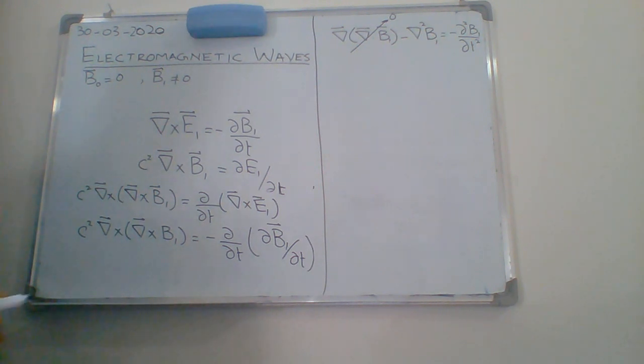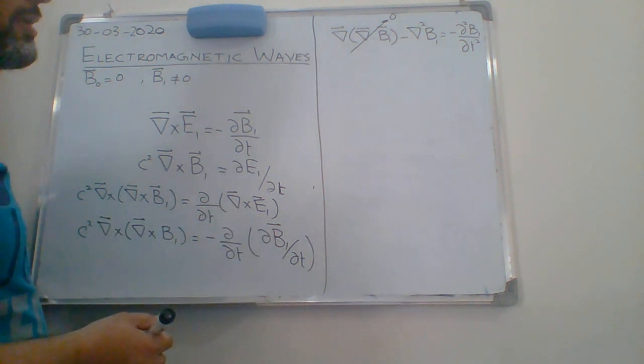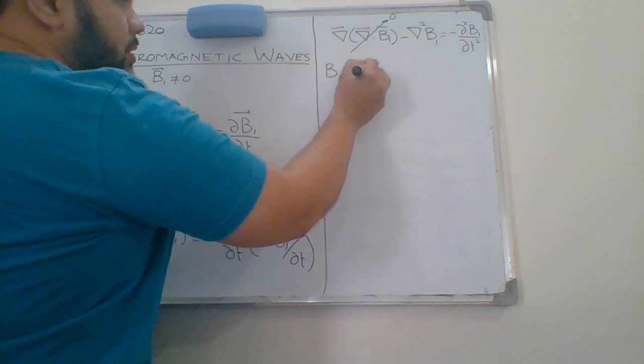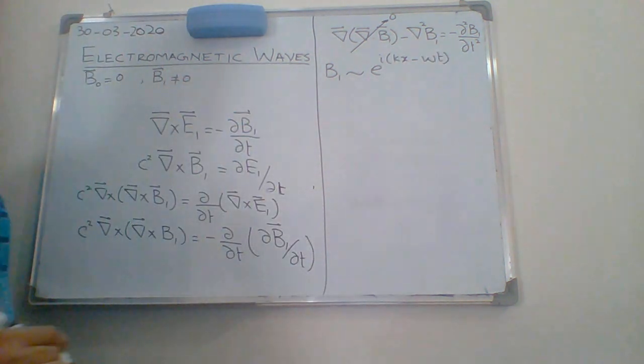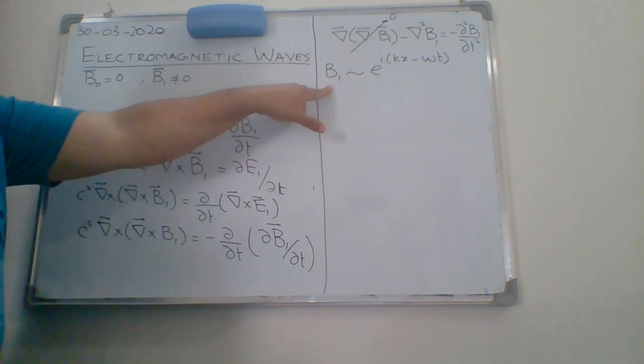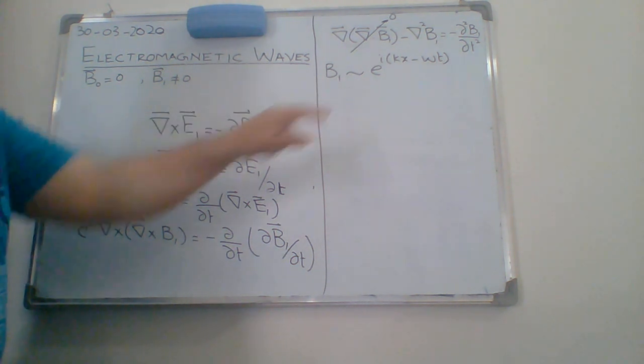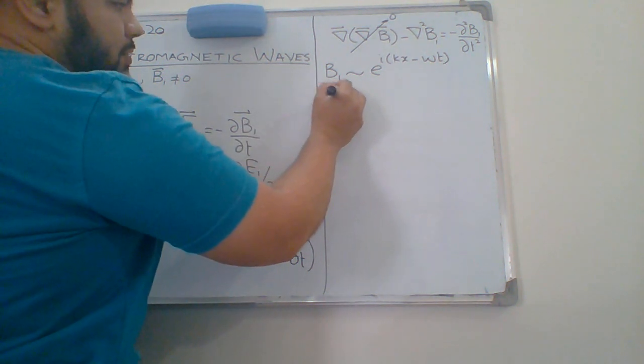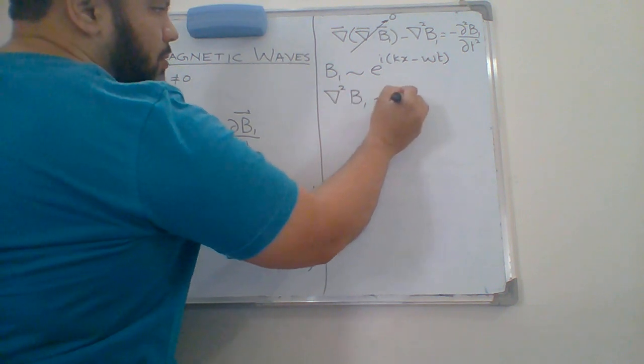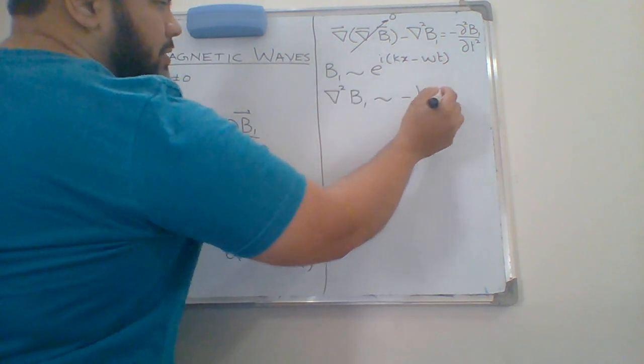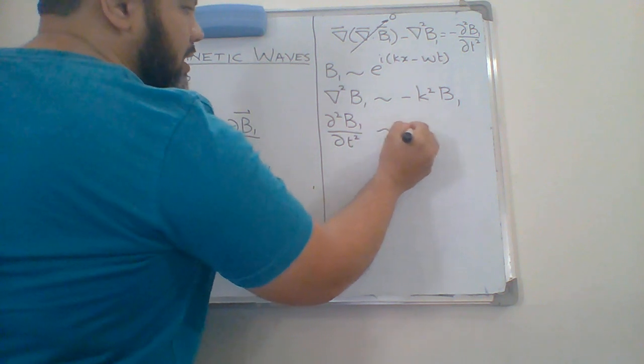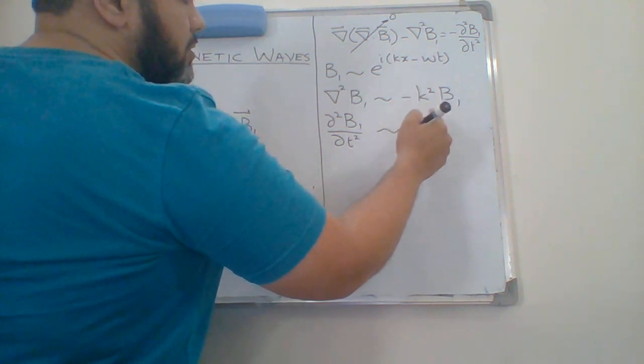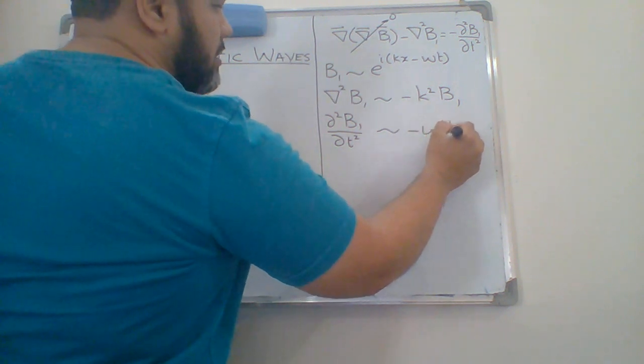Now I am going to consider that my perturbed quantities, as we have already discussed many times in the course, are going to be something like that. So by taking the del of this one and by taking del square of b1, I will get for del square b1 minus k square b1, and for partial squared b1 by partial t squared I am going to get minus omega squared b1.